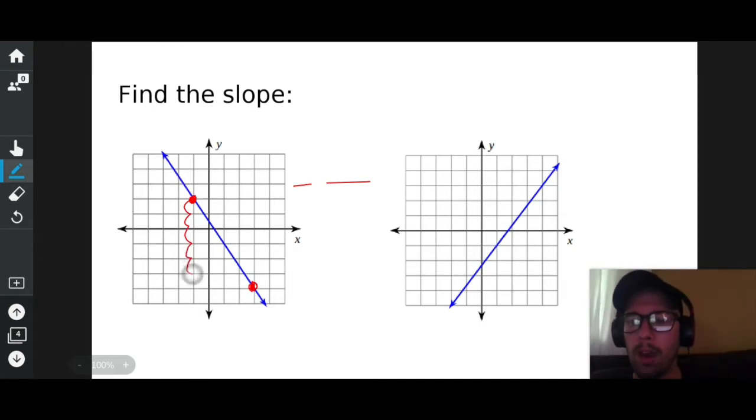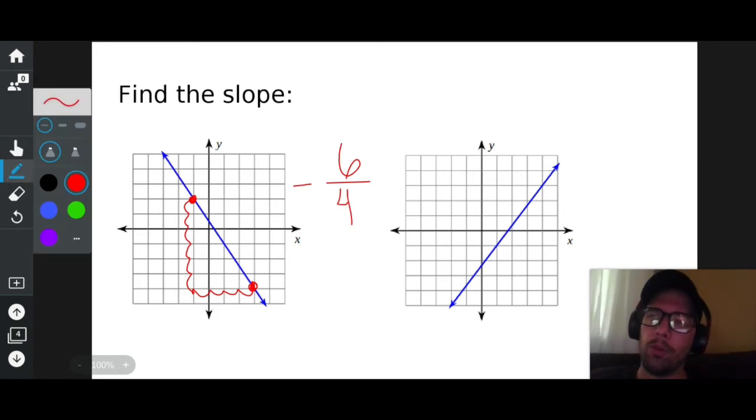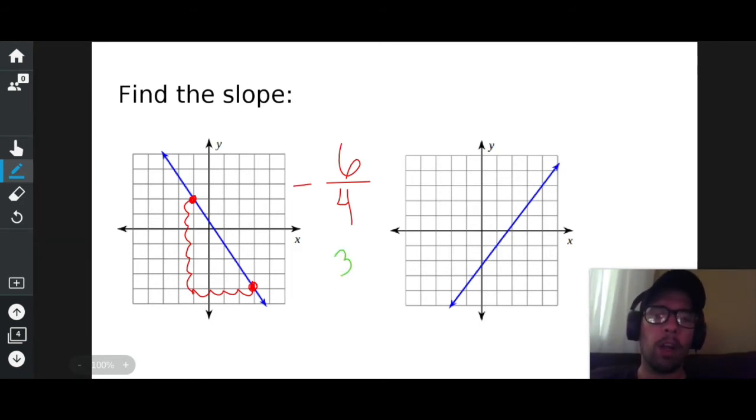So down six over one, two, three, four. Negative six over four. Oh yeah. I can simplify that by dividing both of those numbers by two. So six divided by two is three. Four divided by two is two. And it's negative.